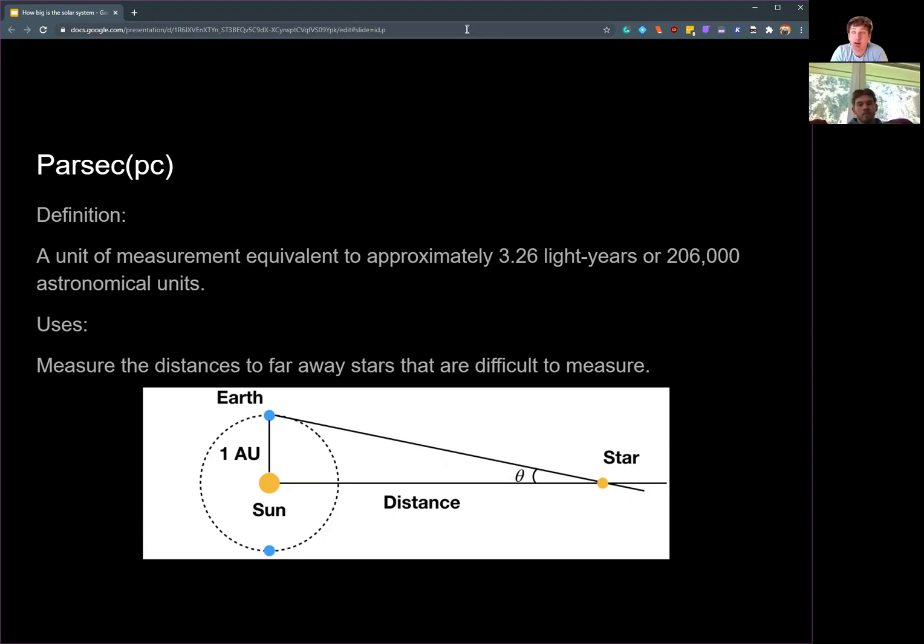And really, it measures the same things that light years do in terms of distance to objects that are very far away. But it's unique in that it's useful for getting accurate distances from far away stars that are difficult to measure.